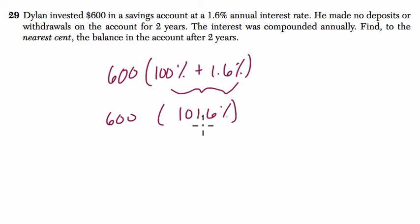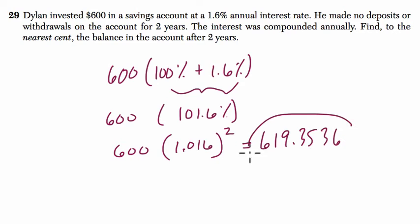Now, we're multiplying by that amount every time we compound the interest for any amount of years. In this problem, we're doing it for two years, so we're doing that twice. And if we calculate this, we get 619.3536. That's our answer.